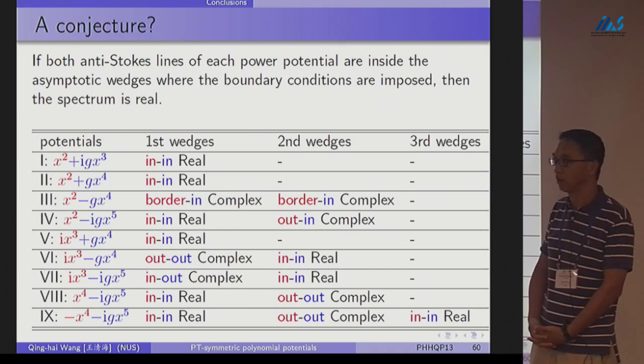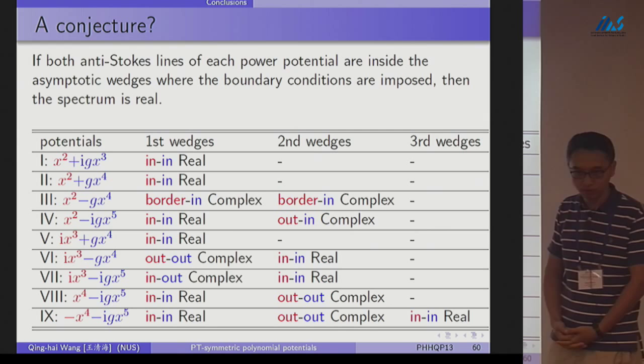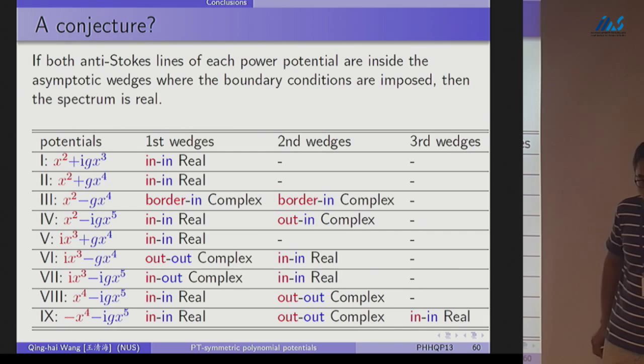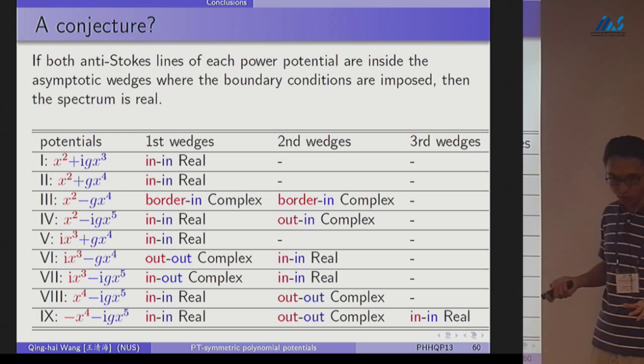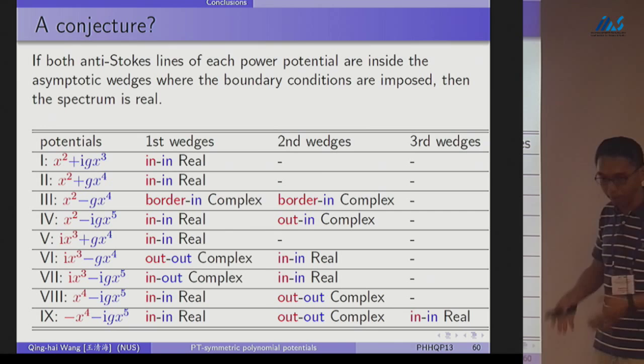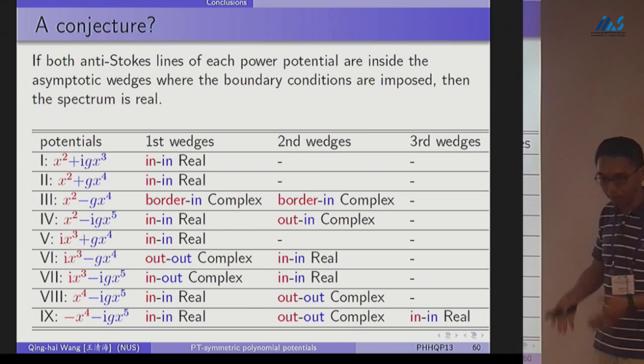It could be. Your last comment, I may have misunderstood. If you take the potential minus x square plus x cube, it has a perfectly real spectrum. That's right. That means my conjecture can only be sufficient, cannot be necessary. Because minus x square in this picture is not PT symmetric. That's right. Even ix is not PT symmetric, ix alone, because it doesn't define a pair of PT pair wedges. There are examples outside this, so they can only be sufficient, cannot be necessary condition.